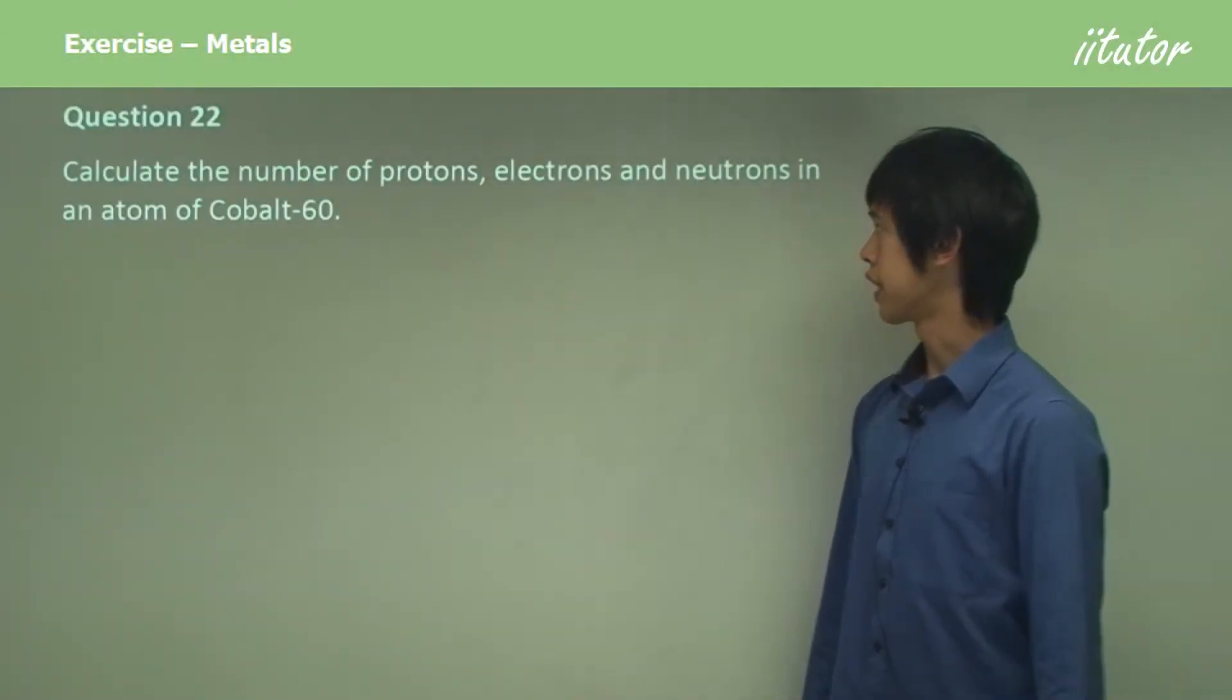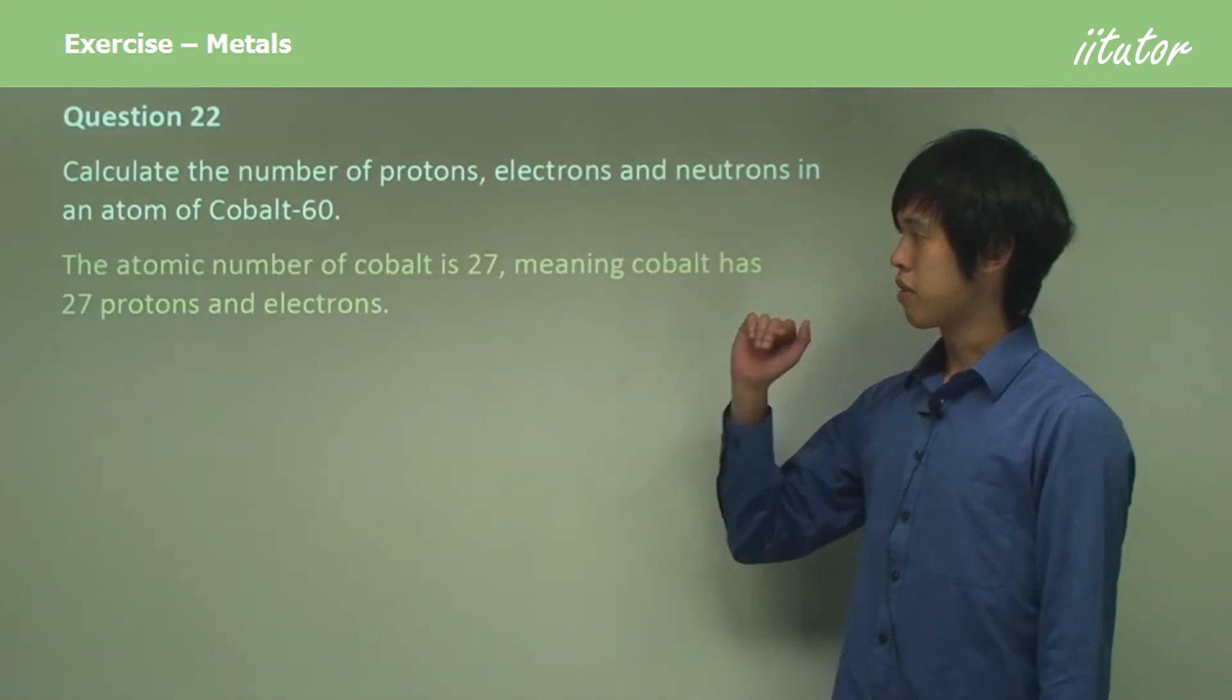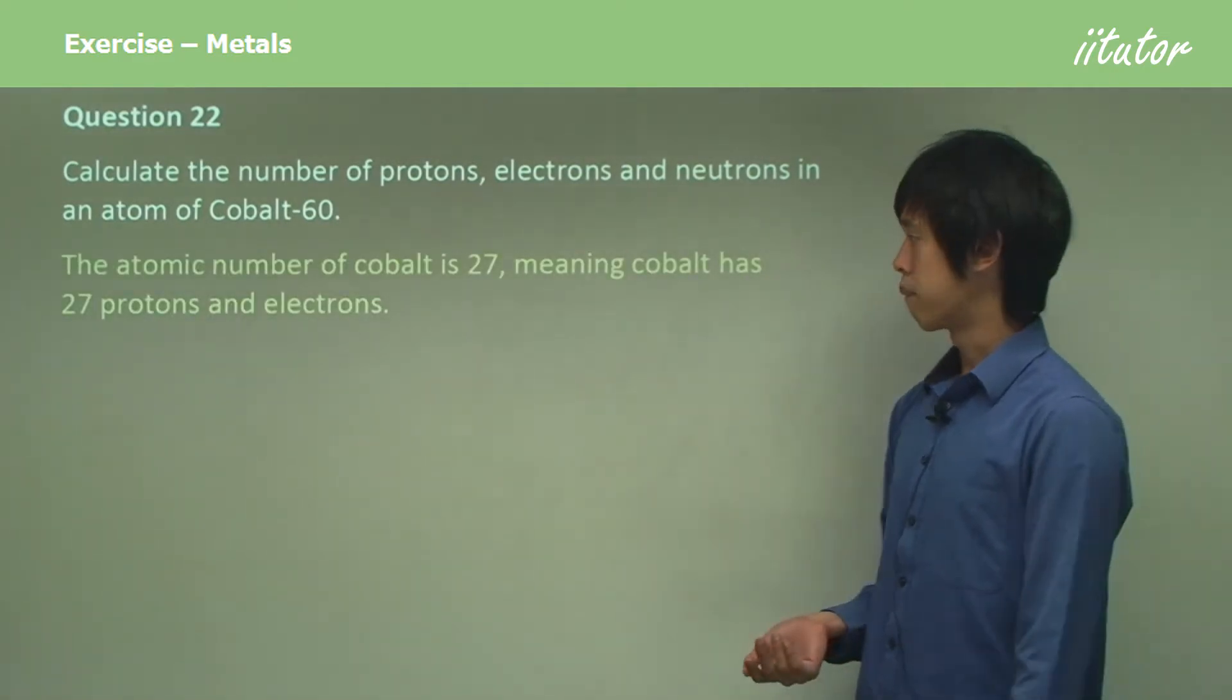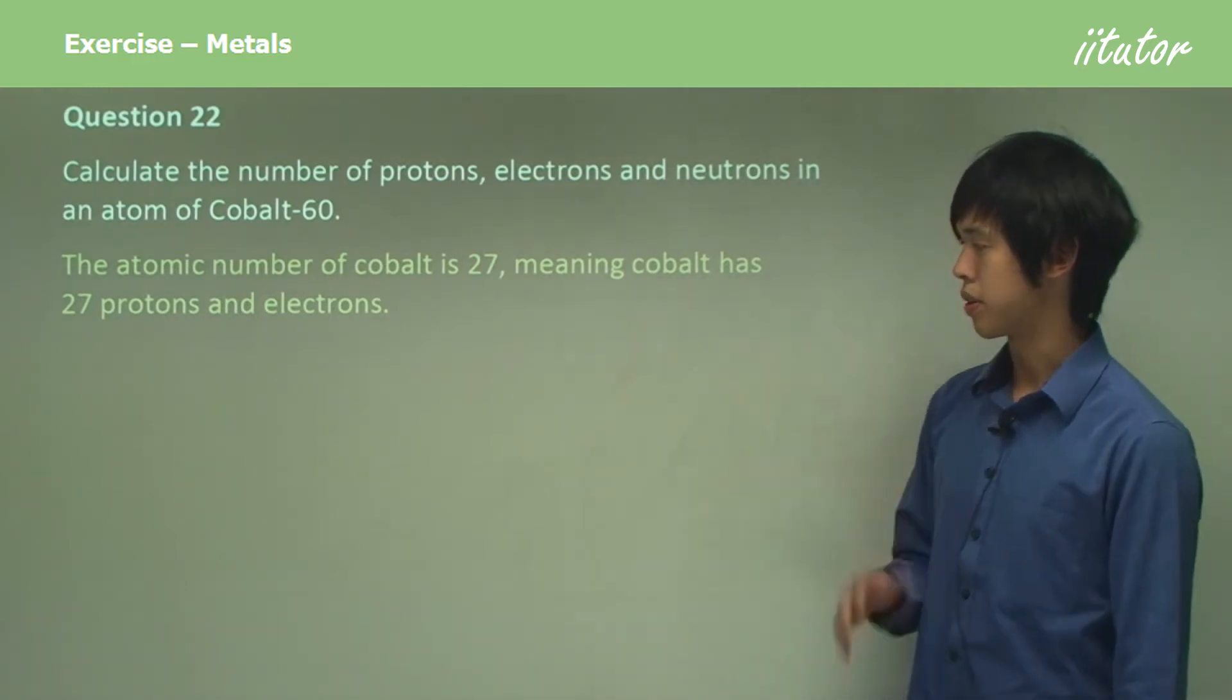Calculate the number of protons, electrons and neutrons in an atom of cobalt-60. The atomic number of cobalt is 27, meaning that cobalt has 27 protons and electrons.